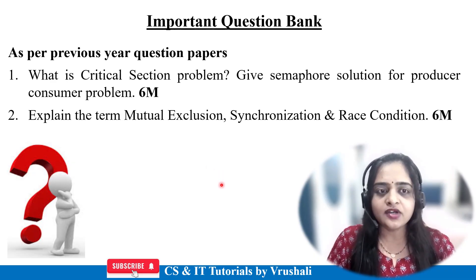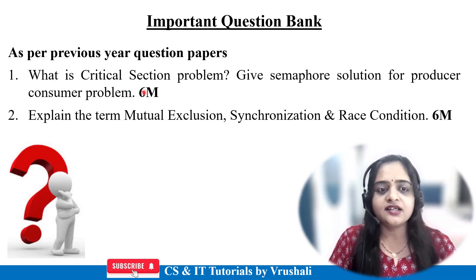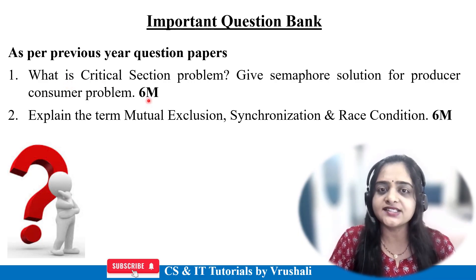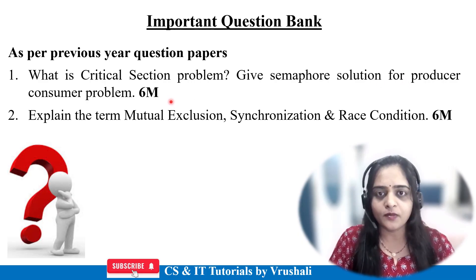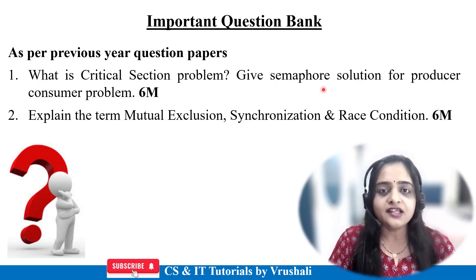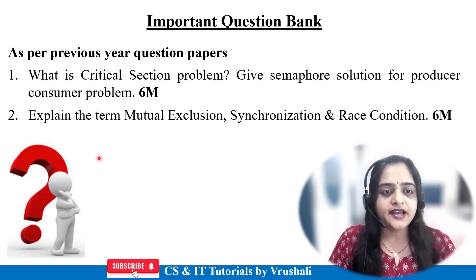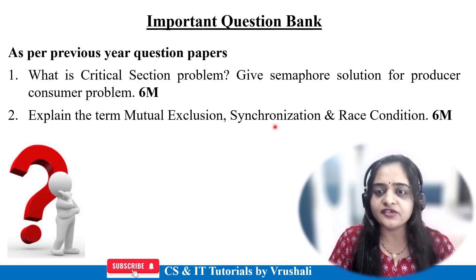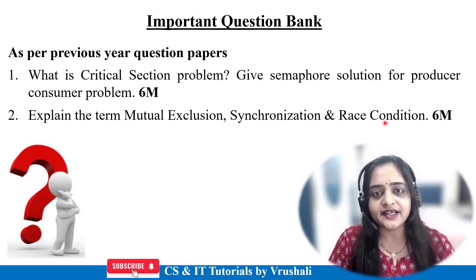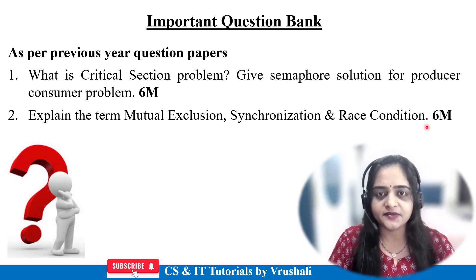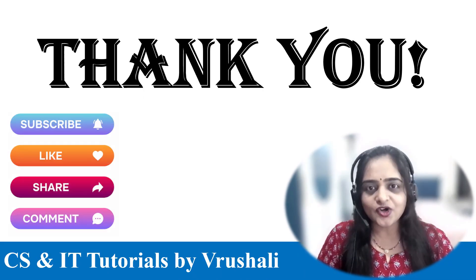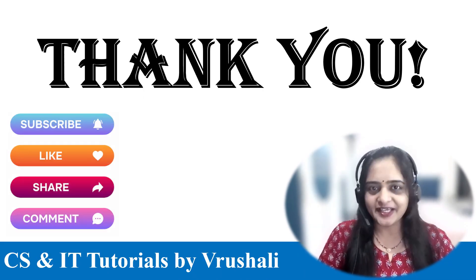On this topic, based on previous year question papers, important questions include: 'What is the critical section problem? Give a semaphore solution for the producer-consumer problem' — you have to explain the producer process and consumer process with code. Another question is: 'Explain the terms mutual exclusion, synchronization, and race condition for six marks.' Prepare all these topics completely. That's all — thank you, keep learning.